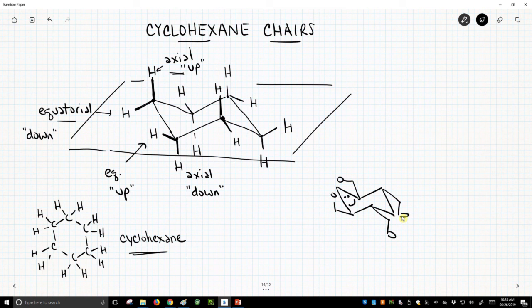But this is the chair conformation of cyclohexane. This is a classic structure to learn to draw as part of organic chemistry. Again, your pictures don't have to be perfect, but they have to be good enough to communicate with someone. But these are the chairs of cyclohexane.